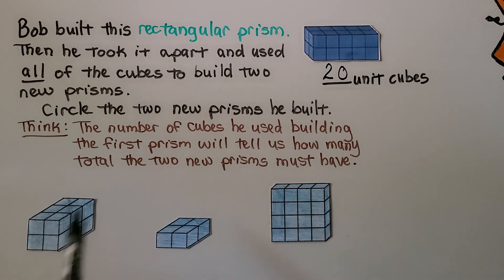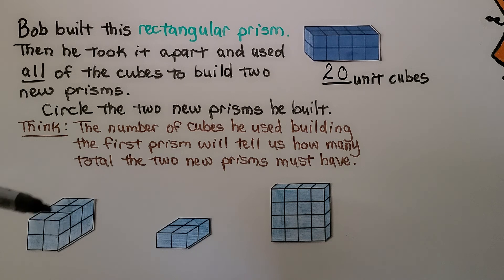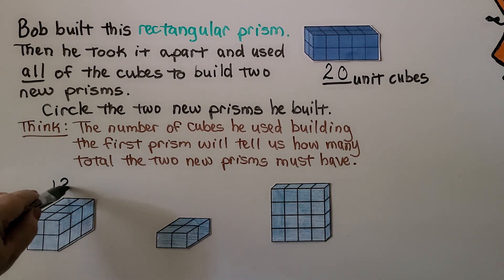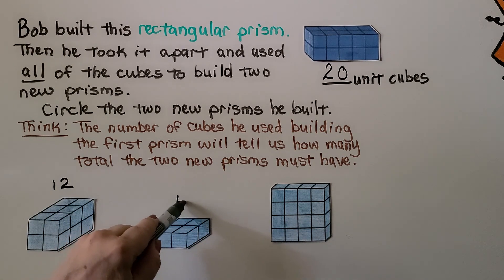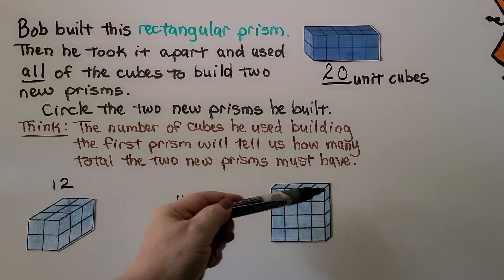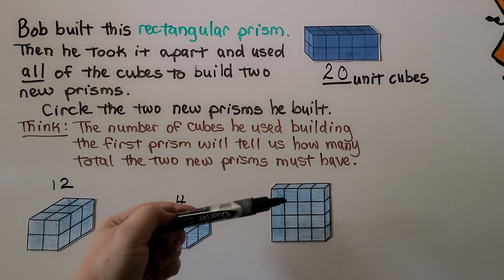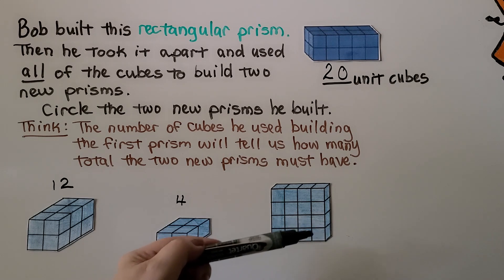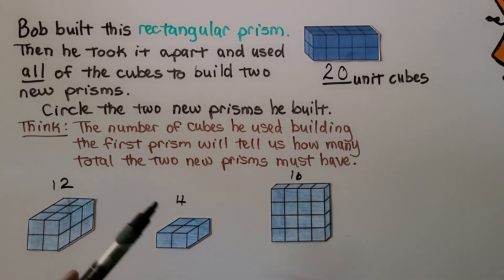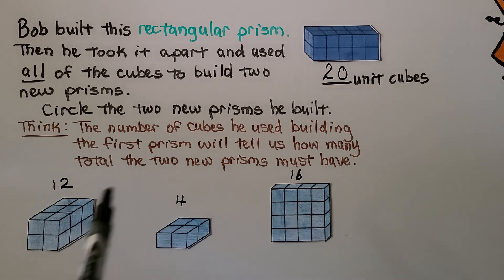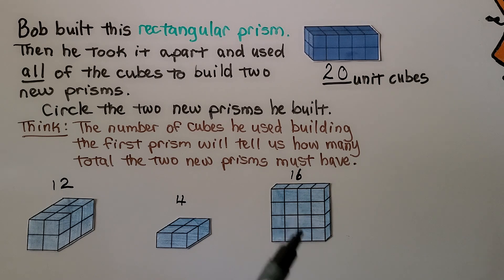We look at one prism — two, four, six on the top layer, with two layers of six, that's twelve. Another prism has four cubes on the top with four layers — that's sixteen. If we add twelve plus four that's sixteen, not twenty. If we add twelve plus sixteen that's twenty-eight, too many. But if we choose the four and the sixteen, four plus sixteen equals twenty. That's the answer.